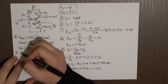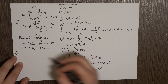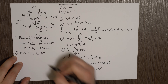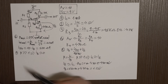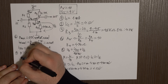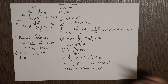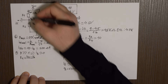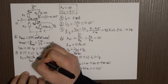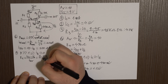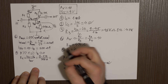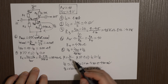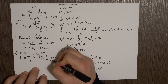Step number 7 is calculating R1. Assuming beta >> 1 means IB ≈ 0, and since the divider current is much larger, this works for us. R1 equals the voltage drop across it — VCC minus VB — divided by the divider current I_div. So R1 = (9 − 1.12 V) / 200 µA = 39.4 kΩ. Since that's not in the E12 series, the closest value is 39 kΩ.